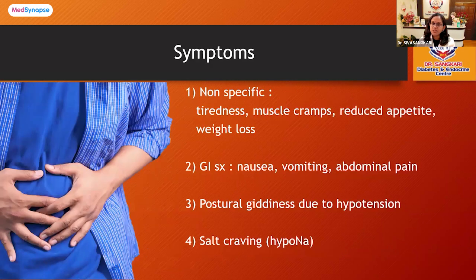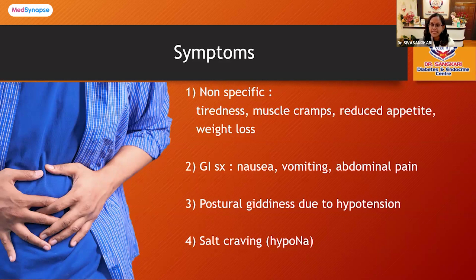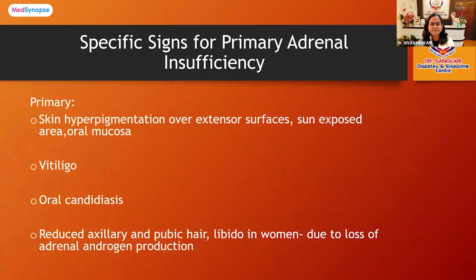The symptoms are usually non-specific. Patients present with tiredness, muscle cramps, reduced appetite, and weight loss. They can also have gastrointestinal symptoms such as nausea, vomiting, and abdominal pain. Some patients may also have postural giddiness due to hypotension. In these patients with hypoadrenalism, there is also hyponatremia, which causes salt craving.